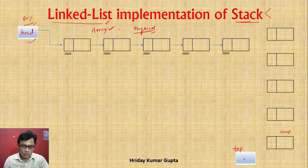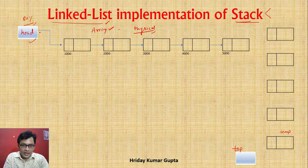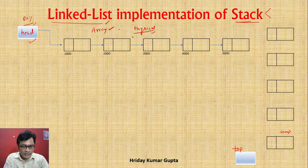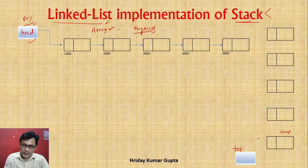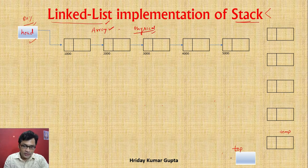The first difference is: in singly linked list we had head, we fixed the head, and PTR was a copy of head. But here we have top. We will use top — top will always point to the most recently added node. We will add top, then top will fix to that node. If we need to loop, then we add top to the required node.